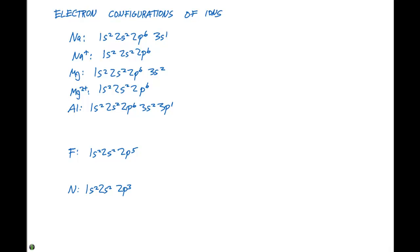For aluminum, aluminum's oxidation state is 3 plus, so we need to remove three electrons. So that's going to give us an electron configuration of 1s2, 2s2, 2p6.